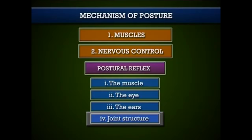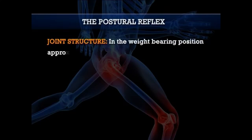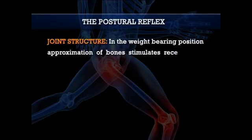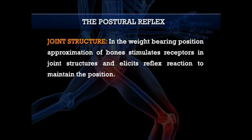The fourth one is joint structure. In the weight-bearing position, approximation of bones stimulates receptors in joint structures and elicits reflex reactions to maintain the position. Skin sensation also plays a part, especially on the soles of the feet when the body is in a standing position. Impulses from all these receptors are conveyed and coordinated in the central nervous system, the chief central structures involved being the cerebral cortex, the cerebellum, the red nucleus and the vestibular nucleus.